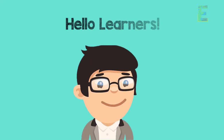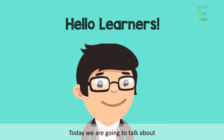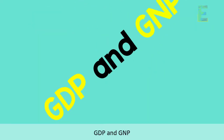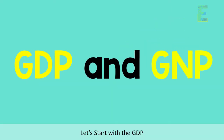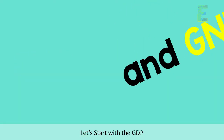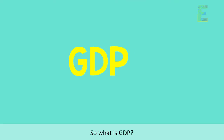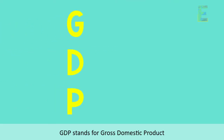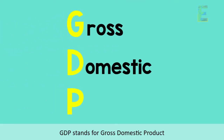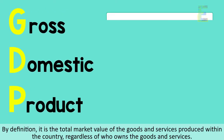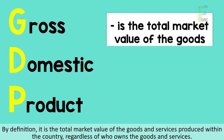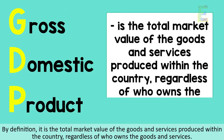Hello learners, today we are going to talk about GDP and GNP. Let's start with GDP. GDP stands for Gross Domestic Product. By definition, it is the total market value of the goods and services produced within the country, regardless of who owns the goods and services.